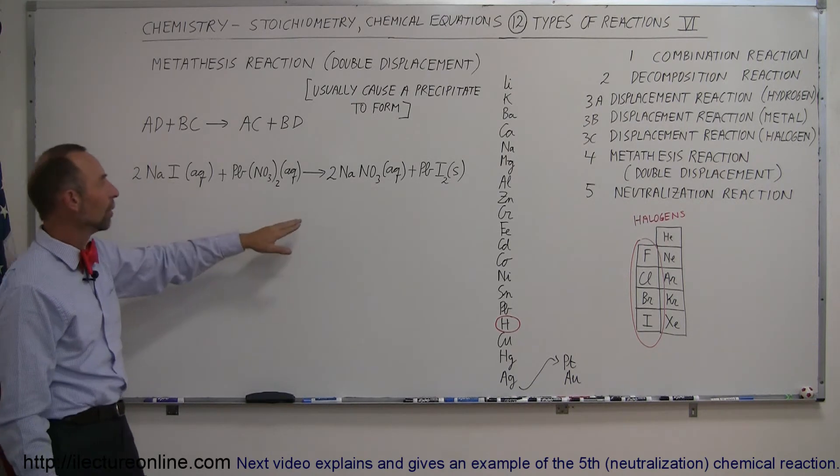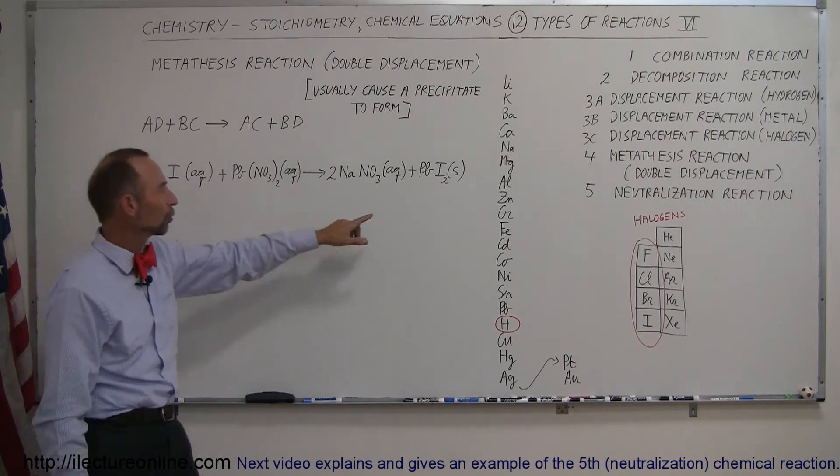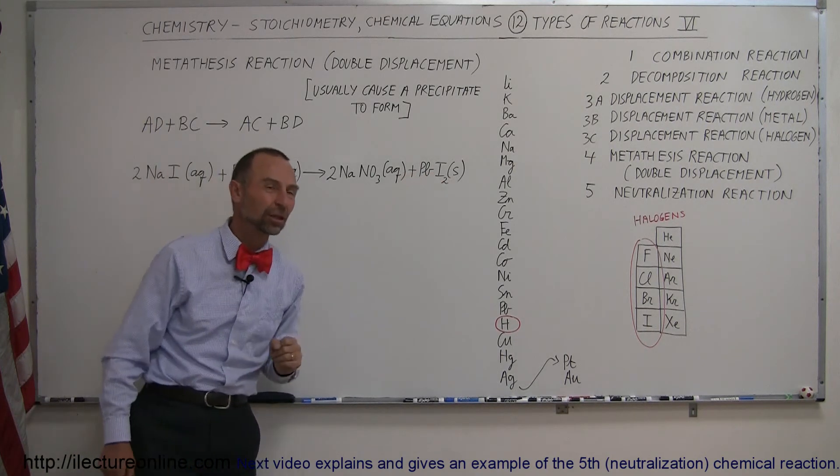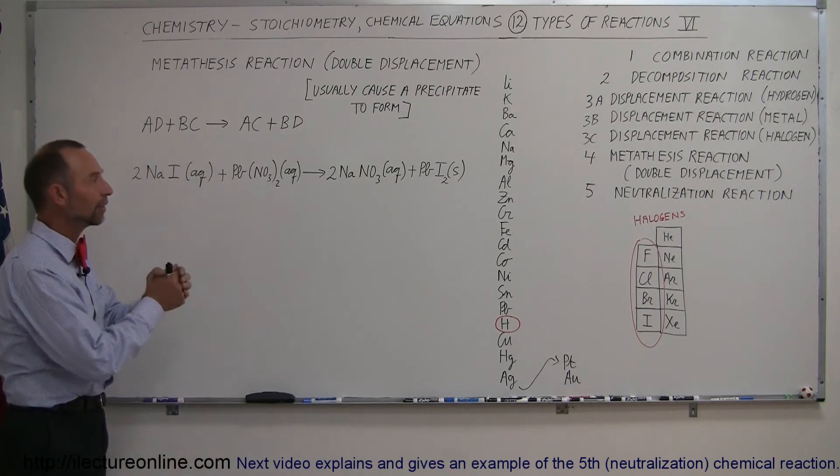The -1 of the iodine matches up with the +2 of the lead. You'll need two of them to make them electrically neutral, and they'll join together and precipitate out.